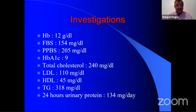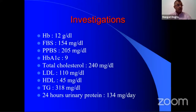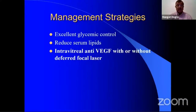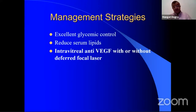He has presented the investigations: the patient is not anemic, but he is poorly controlled — very important. HbA1c is nine, and he is dyslipidemic. These are the major issues. You need to take care of all these things: achieve excellent glycemic control, which is very important in this case, and also reduce serum lipids because he has dyslipidemia.